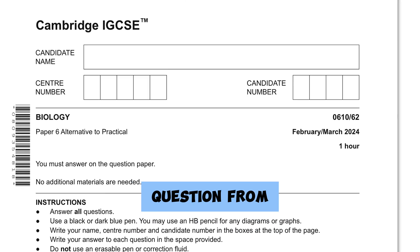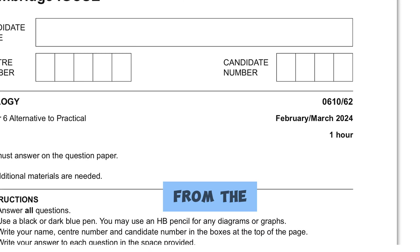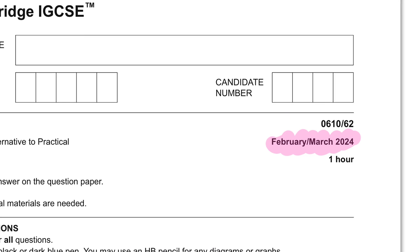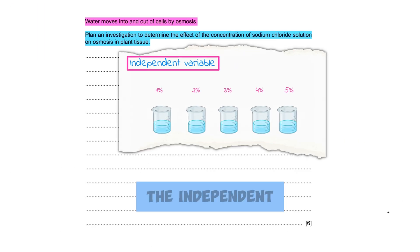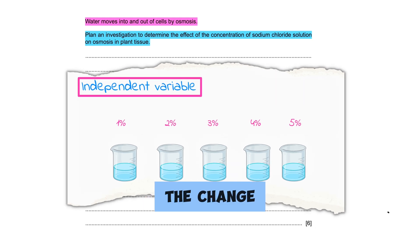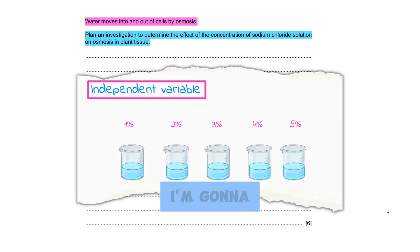This is the last question from Paper 6 from the latest exam session of 2024. The independent variable here is going to be the change in salt concentrations.